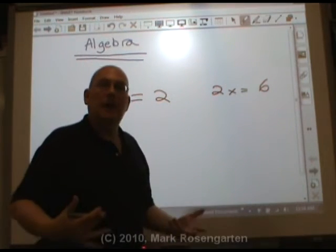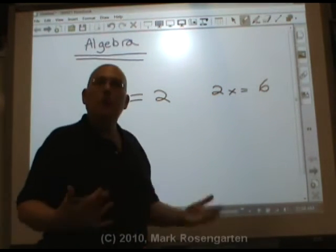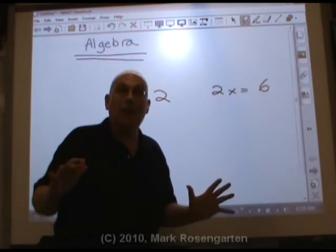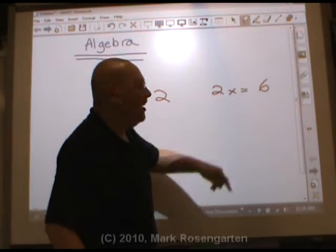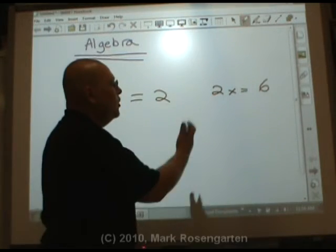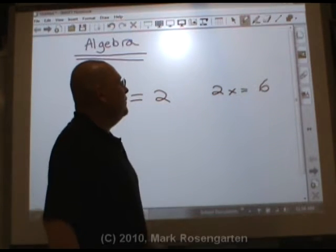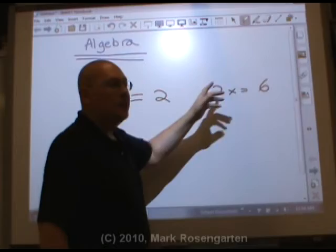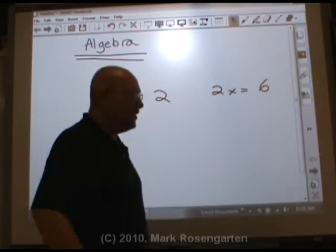X is a variable. It's a number whose value we don't know. And that's the whole point of doing algebra, to figure out what that unknown value is. 2x equals 6. Well, that means that if you take whatever x is and double it, you'll get 6. So how do you solve for x?